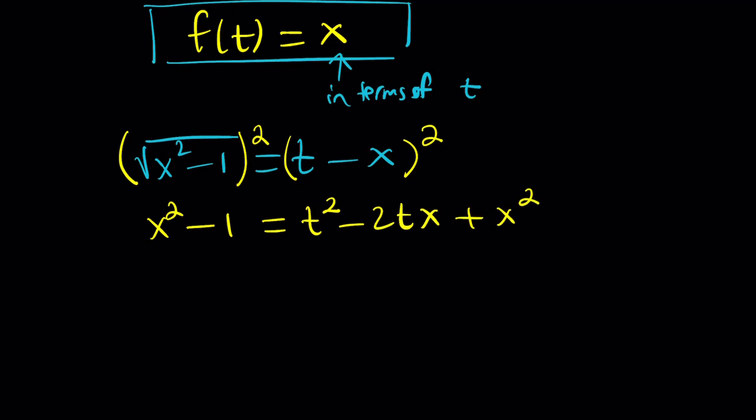Now, this squaring might cause some issues because we have to be careful about the extraneous solution. That's why we want to check results at the end. But here, so far, we got this and x squared cancels out. Remember, our goal was to solve for x. So let's go ahead and put the 2tx on the left and bring the negative one over to the right.